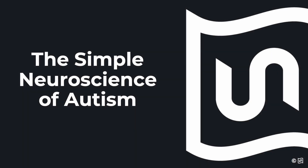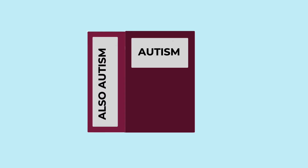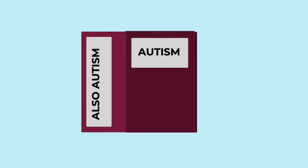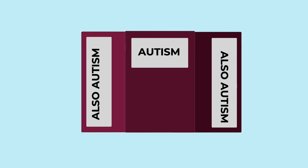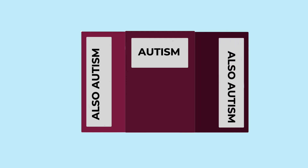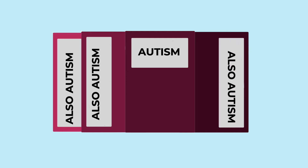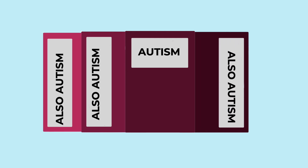Welcome to the Simple Neuroscience of Autism. Autism is often used as a condition descriptor, but in reality, autism is a spectrum disorder that encompasses a variety of conditions and symptom presentations that all share a few common traits.